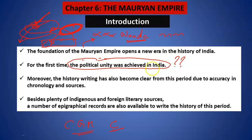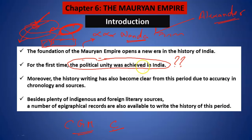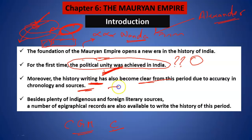Why this was done? This was done because during the time of the Nanda Dynasty, Alexander's invasion also took place. The Mauryans realized that they must achieve the political unity of the country if they have to prosper. Agar humko aage tarakki karni hai, humko hamare samrajye ko bachana hai, to humko political unity to karni hi padegi. Moreover, history writing has become very clear from this period and the chronology is very clear.